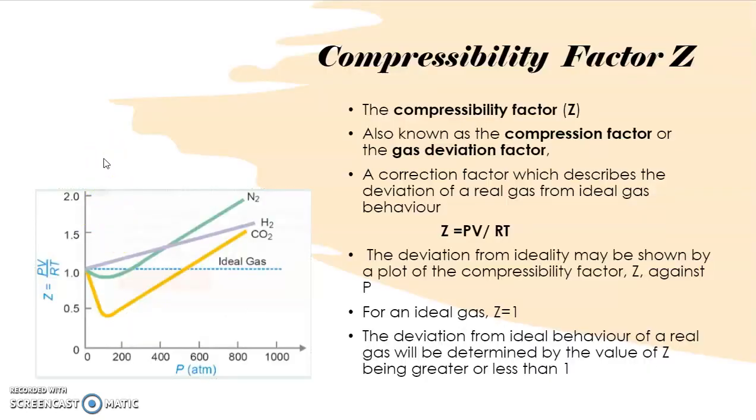In the previous video, I mentioned about compressibility factor Z. Now what is this compressibility factor? It is known as compression factor or the gas deviation factor. This is a correction factor which describes the deviation of real gas from ideal gas behavior. It is a very simple ratio of PV upon RT. So the ideal gas equation is slightly modified to get the value of Z. So Z equals PV upon RT. The deviation from ideality may be shown by a plot of compressibility factor Z against P.